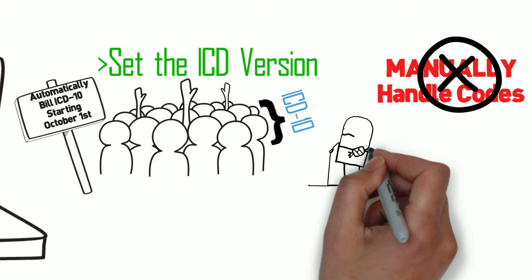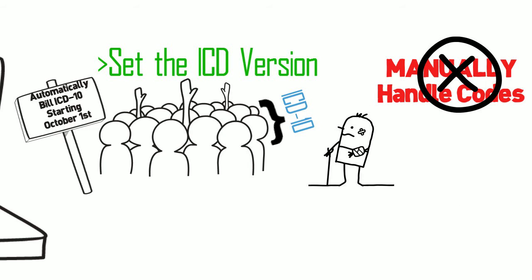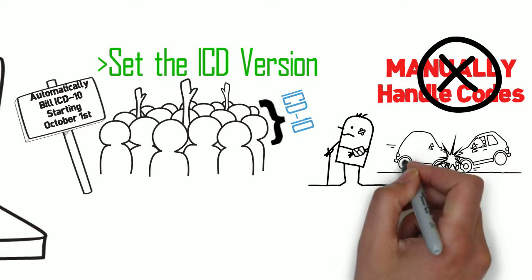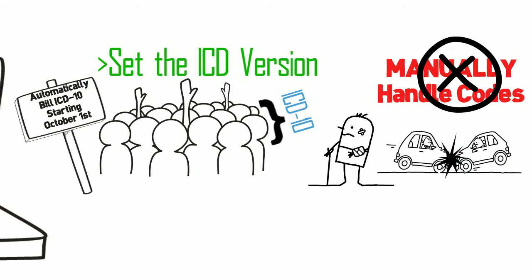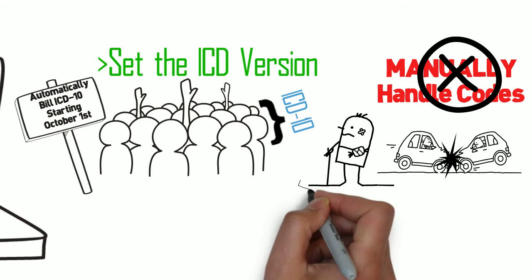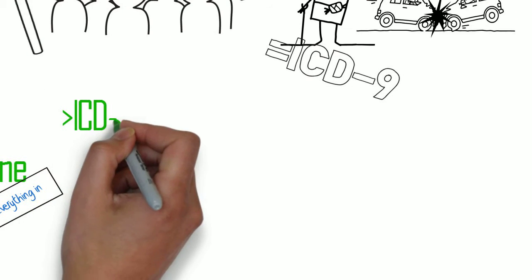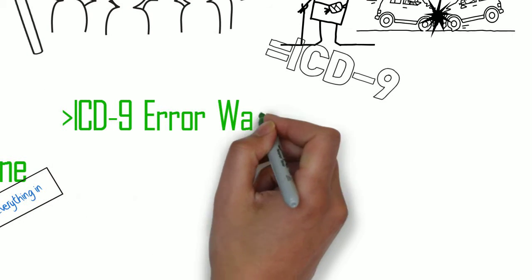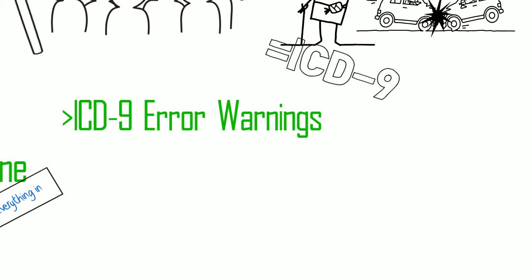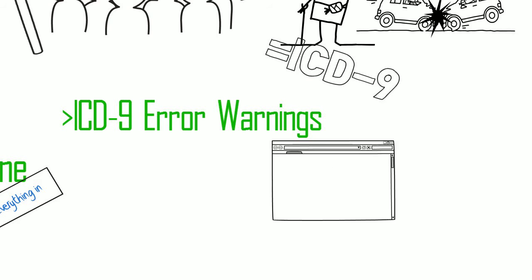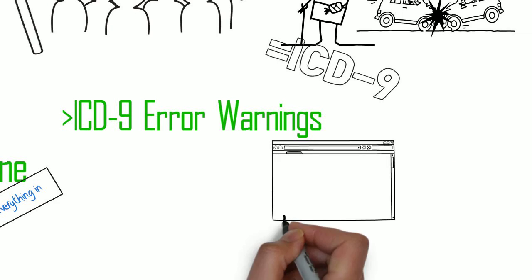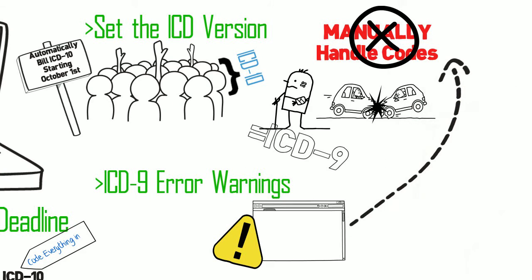This is especially helpful because workers comp and auto claims aren't required to switch to ICD-10, and you don't want to worry about making sure the doctor knows whether you're coding an ICD-9 or ICD-10. The program will also warn users if they're using a code that doesn't have an ICD-9 equivalent when the insurance requires ICD-9, again alleviating a huge manual process.